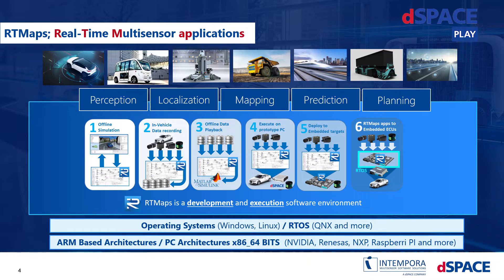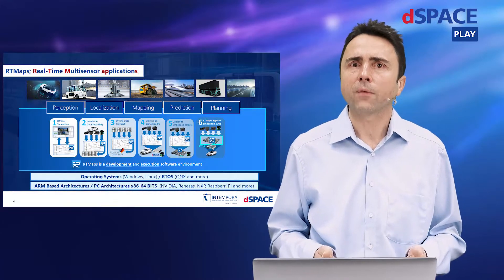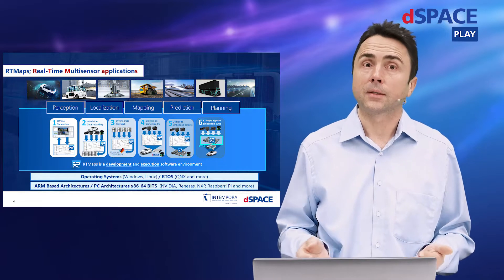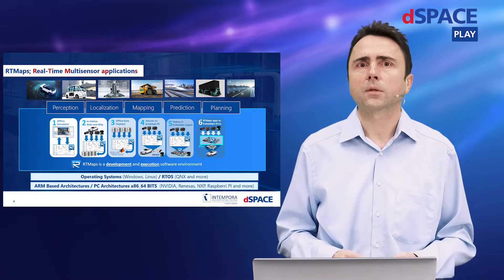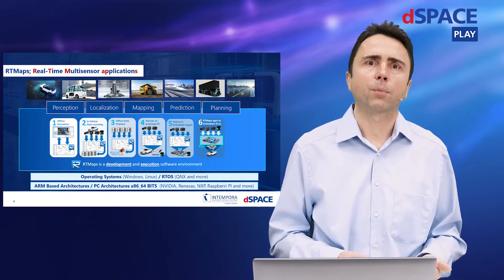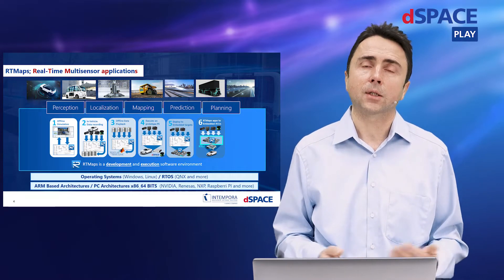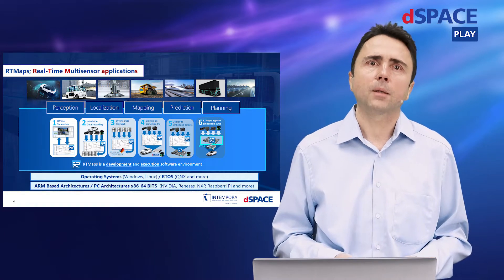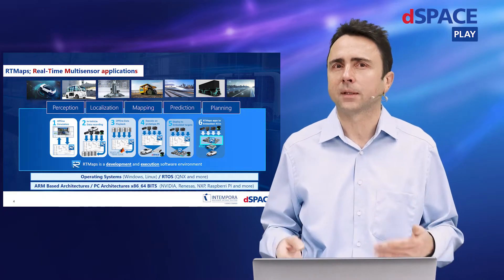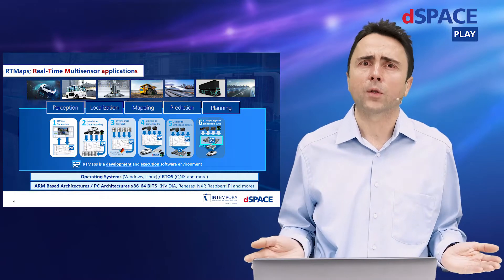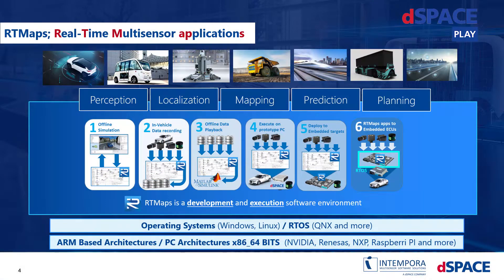Artimaps lets you develop your functions and provides a middleware for execution. It can also be used for offline simulation, data recording, and data replay. You can prototype on PC, embedded platforms, or embedded ECUs with real-time operating systems such as QNX. Artimaps is not designed for a specific domain and not limited to automotive — it could be used for railway, logistics, and many others to deal with multi-sensor use cases.